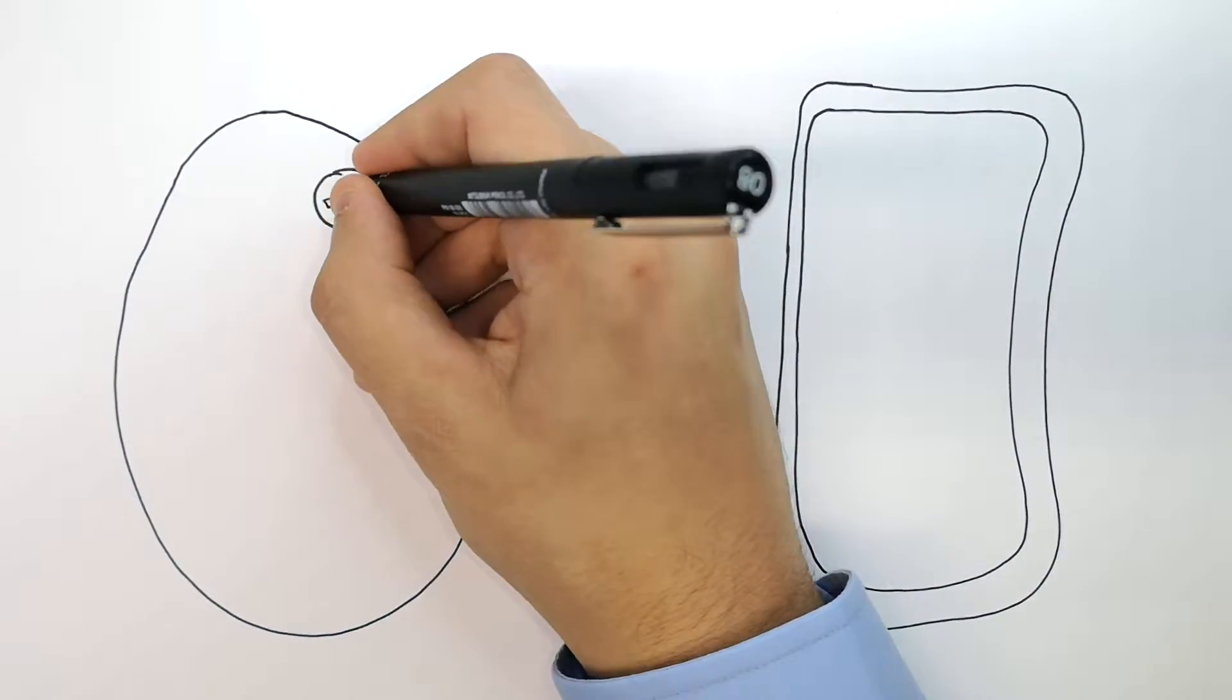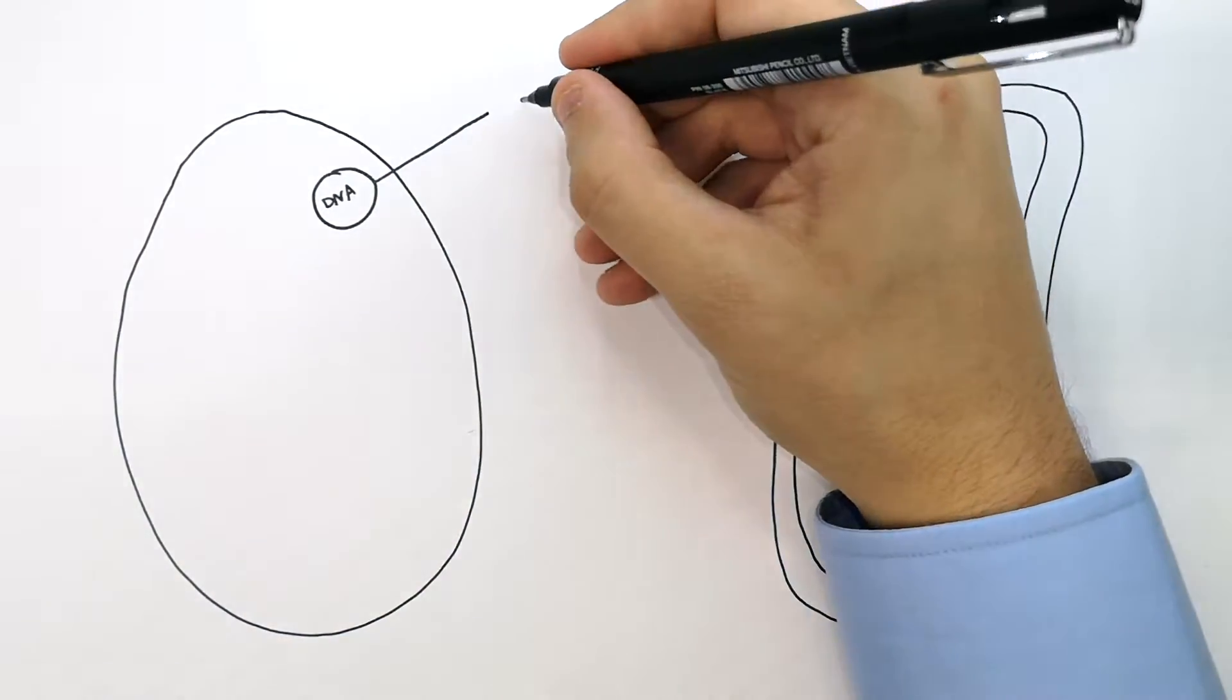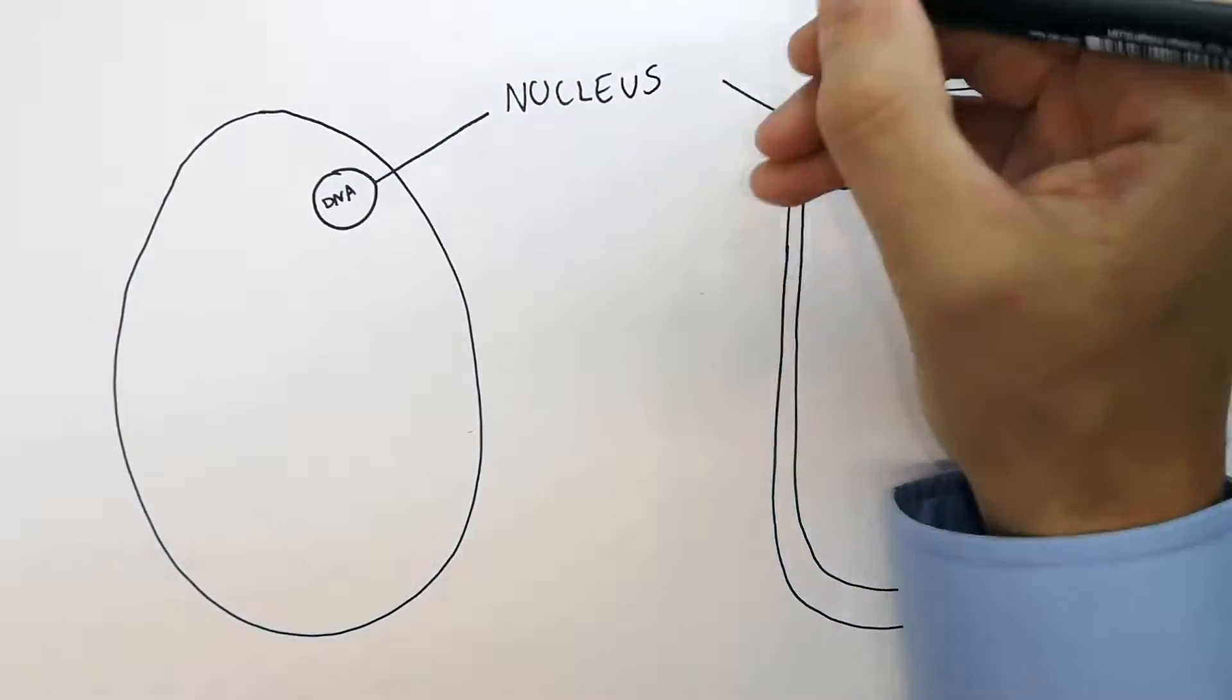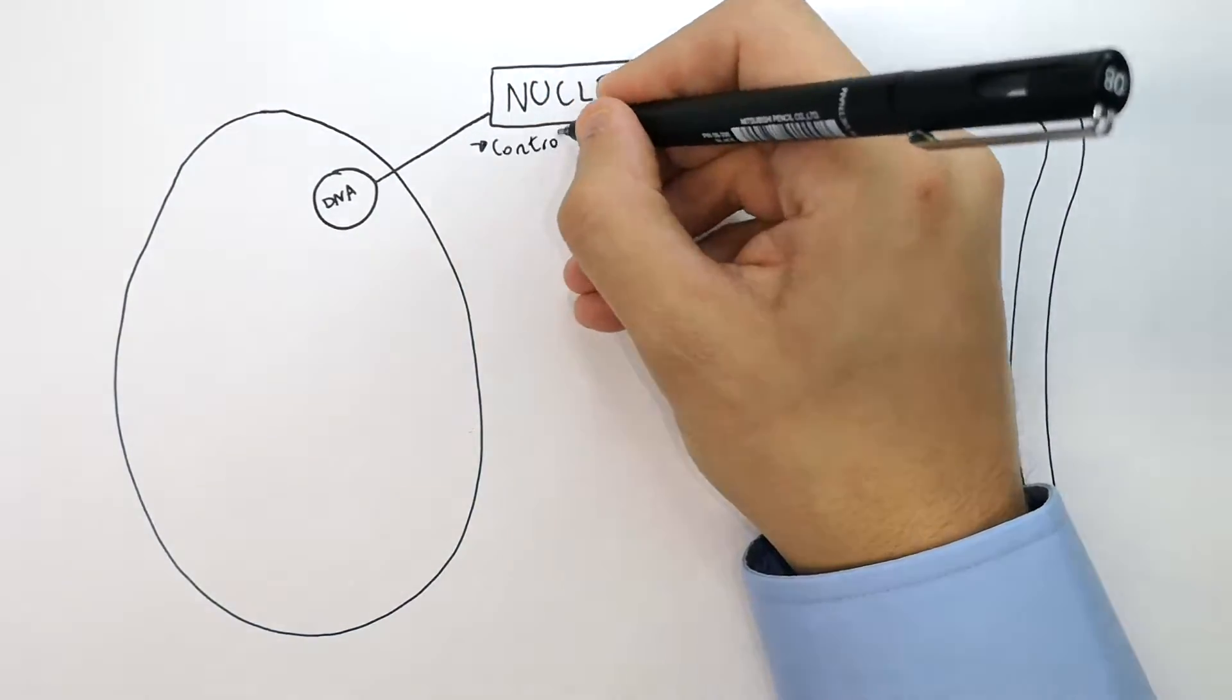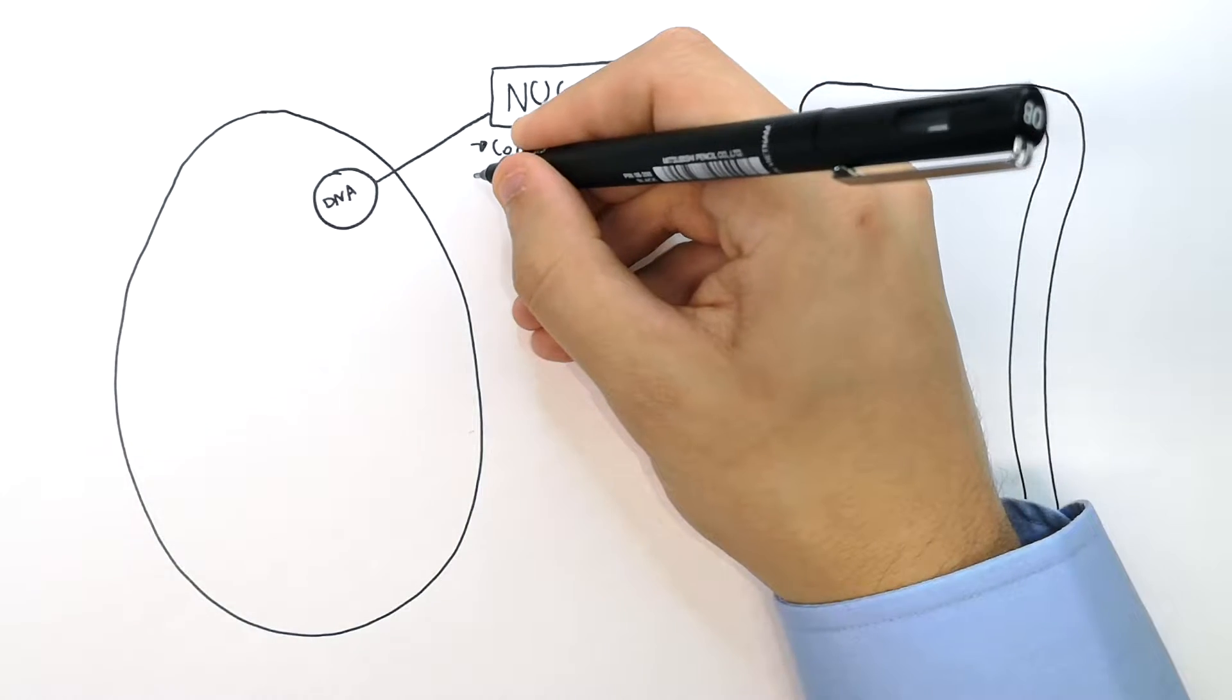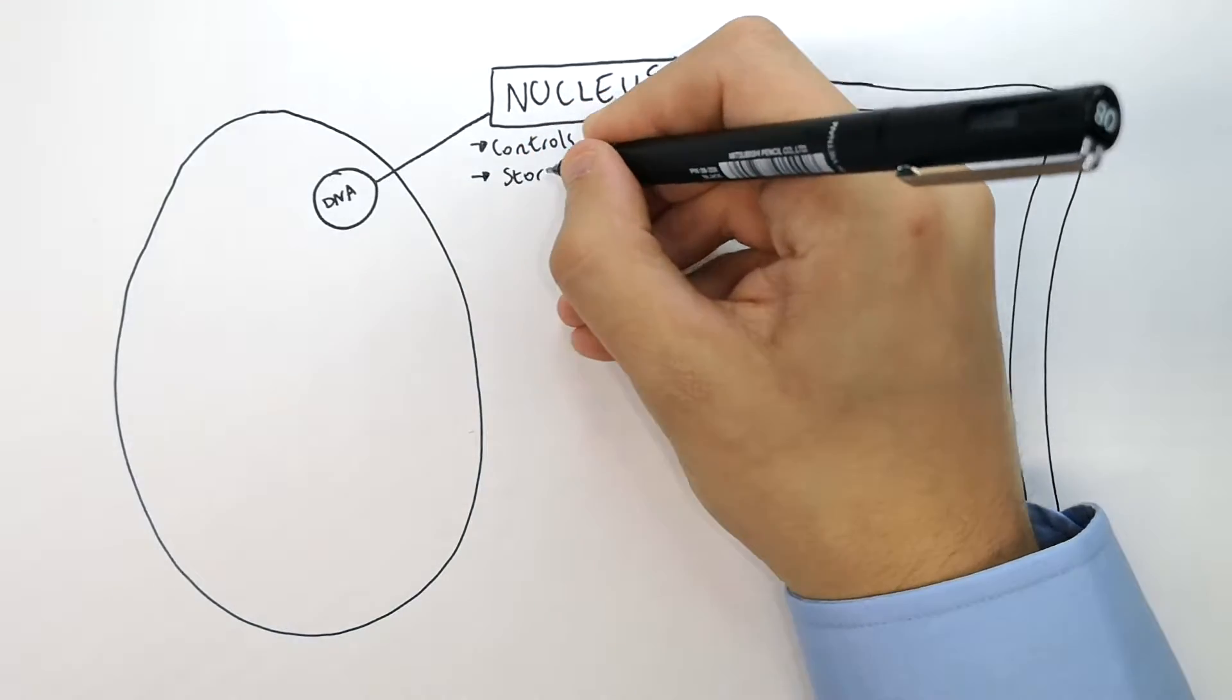I'm going to start by drawing the nucleus. The nucleus is in both animal and plant cells. It's where the DNA is stored. As you can see, I've written DNA inside the nucleus. The nucleus stores DNA and controls the activities of the cell.